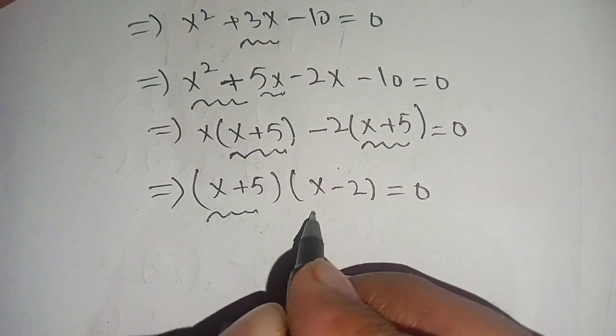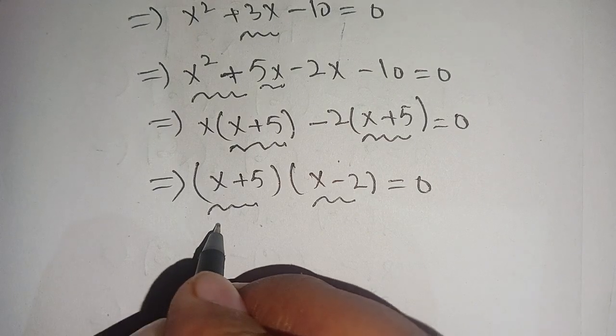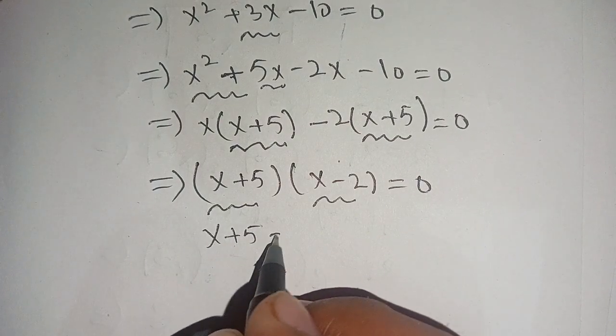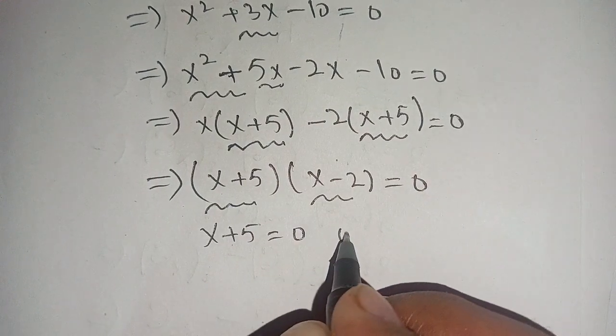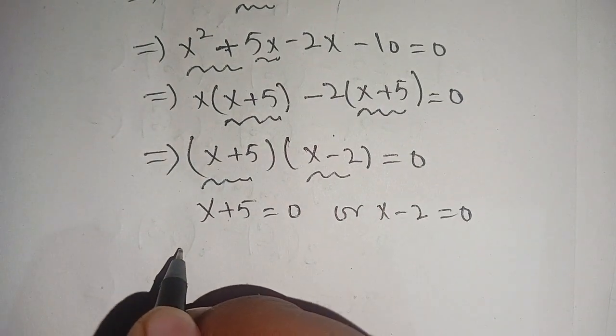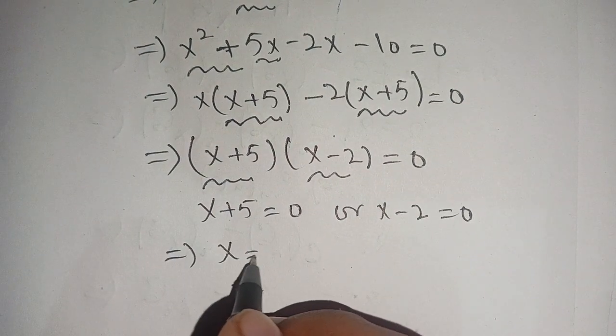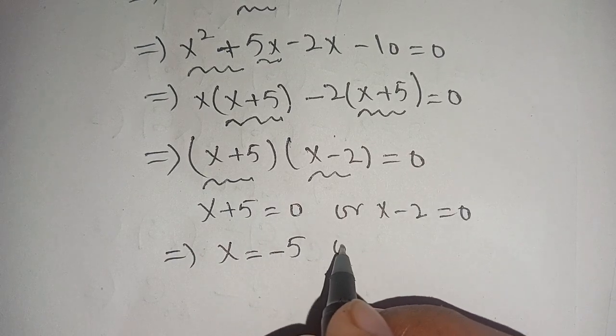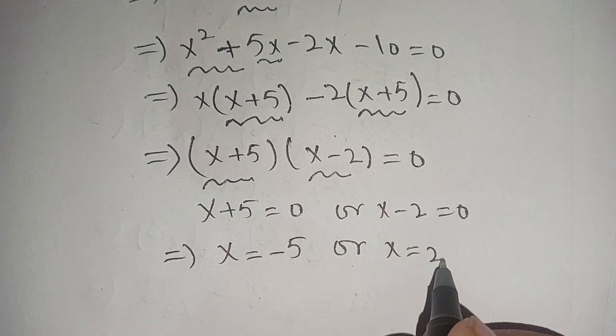Now on equating both terms to 0 we get x plus 5 is equal to zero or x minus 2 is equal to zero, which gives us x is equal to minus 5 or x is equal to 2.